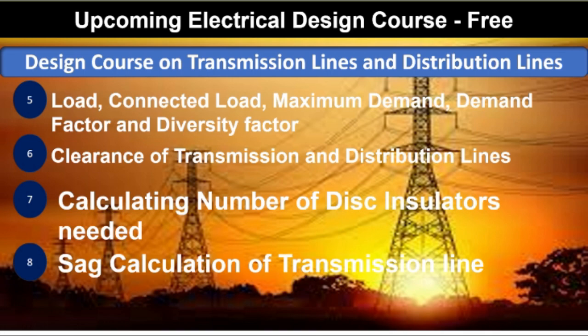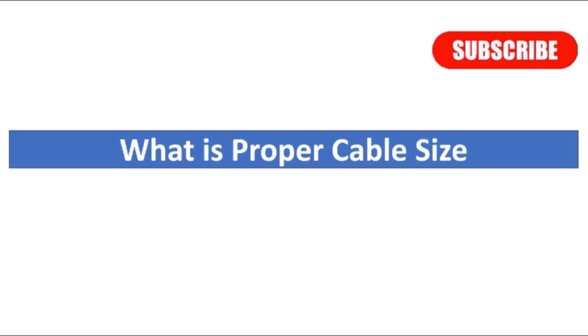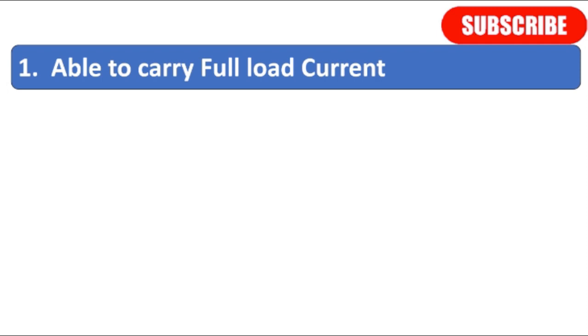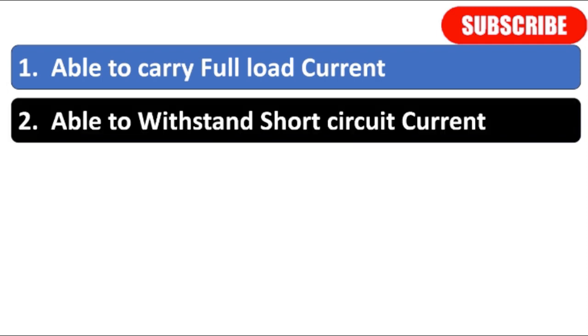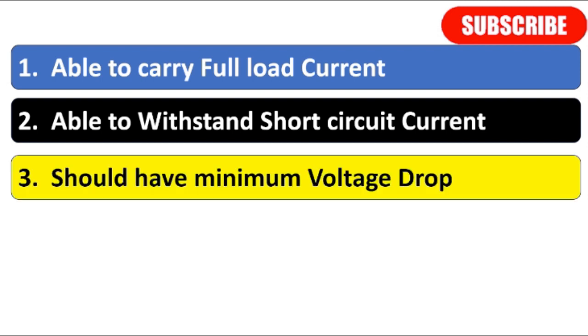In the previous lecture we saw that proper cable sizing means the cable must satisfy three conditions: first, the cable should be able to carry the full load current; second, able to withstand the short circuit current; and third, should have minimum voltage drop.